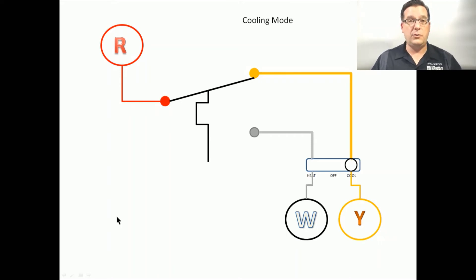Now that we know we have a demand for cooling, room temperature rose, pushing the thermostatic element in one direction, moving the switch to complete the circuit between the R terminal and the Y terminal, and then that 24 volts goes on to energize the cooling system.